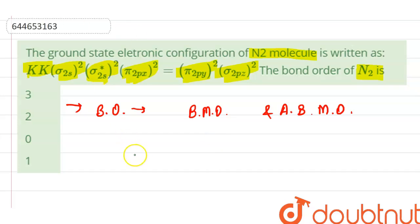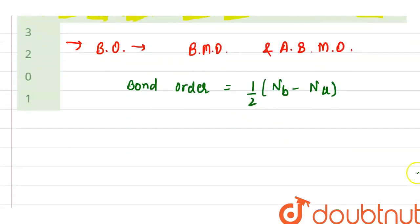It gives us an estimated quantity of degree of covalent bond between the atoms. So bond order equals half into Nb minus Na. Here Nb means number of bonding electrons and Na means number of anti-bonding electrons. Number of bonds in a molecule is also referred to as bond order.